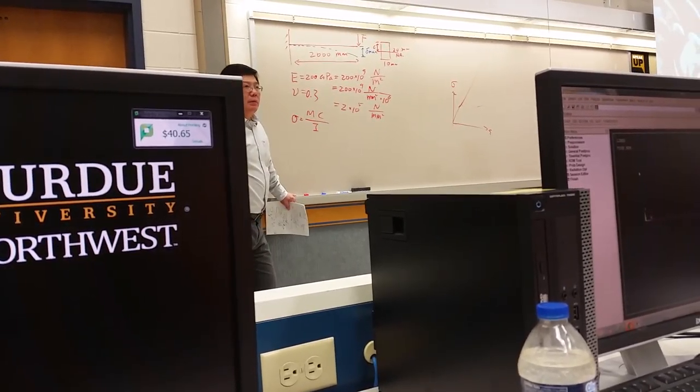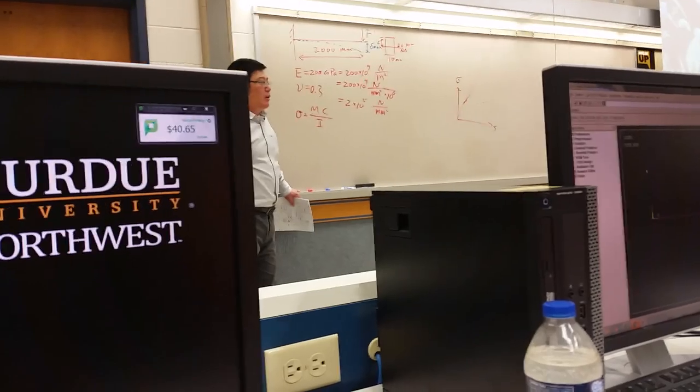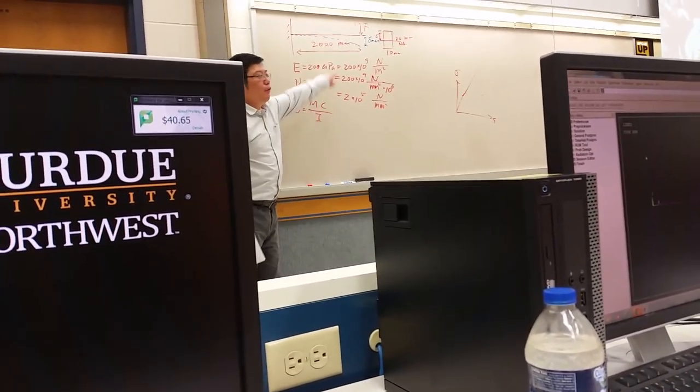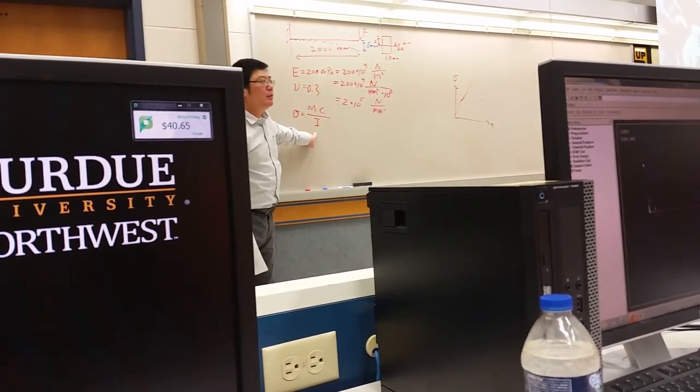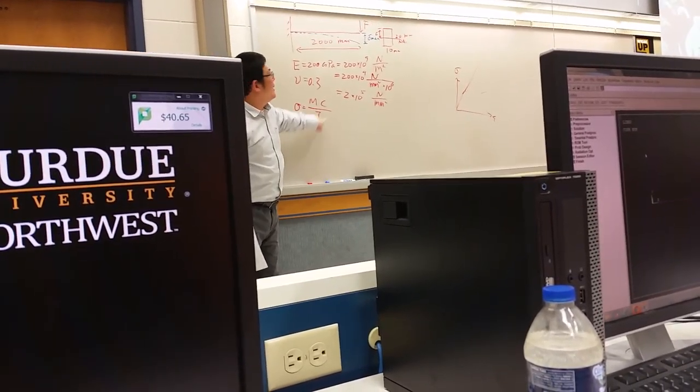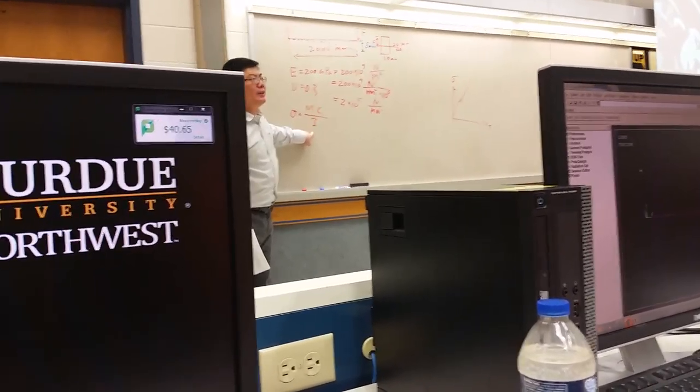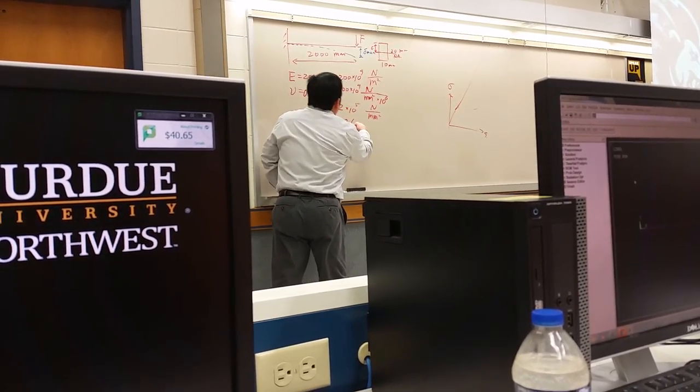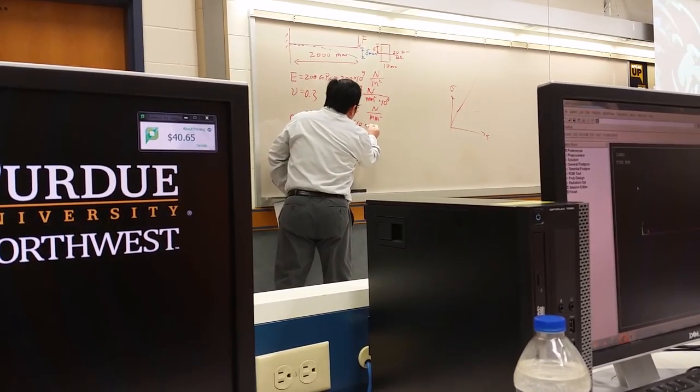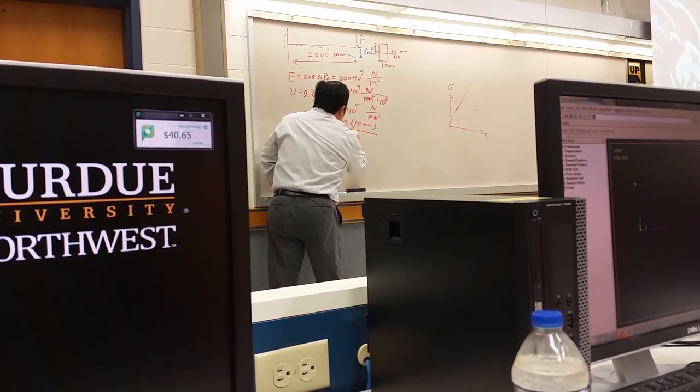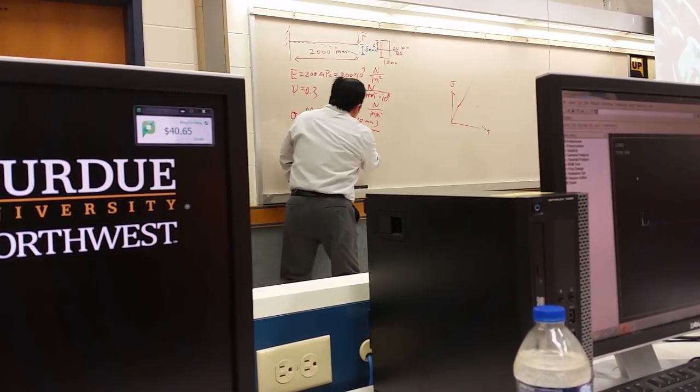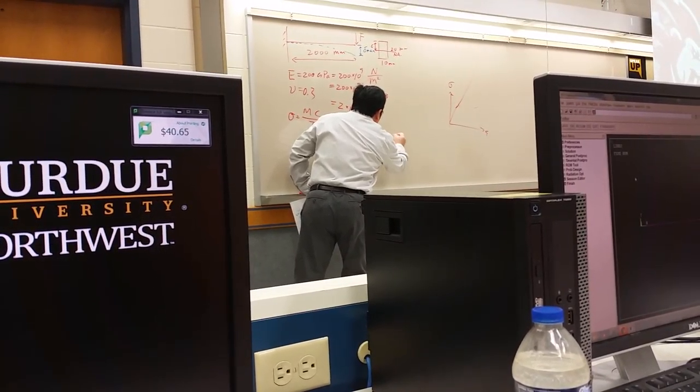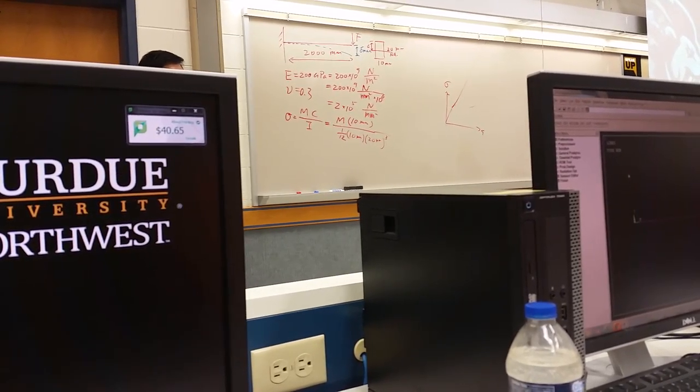So over the bending moment of inertia. Is I constant from the left end to the right end? I constant? Yes. That is a rectangular cross section. So it's constant. And it equals M. This is always constant. 10 millimeter. 10 millimeter. And the moment of inertia for this rectangle cross section is 10 millimeter and 20 millimeter cubed. Make sense? Yes.